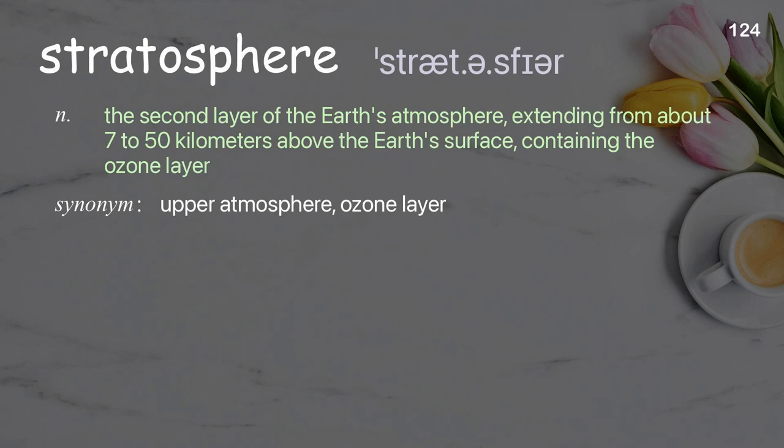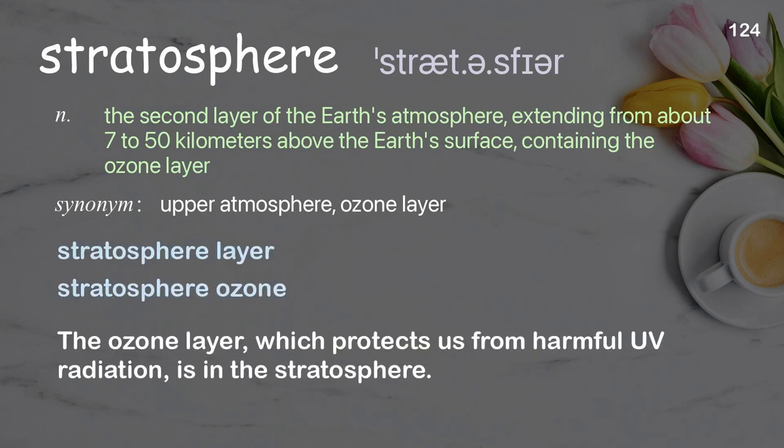Stratosphere: the second layer of the Earth's atmosphere, extending from about 7 to 50 kilometers above the Earth's surface, containing the ozone layer. Examples: stratosphere layer, stratosphere ozone. The ozone layer, which protects us from harmful UV radiation, is in the stratosphere.